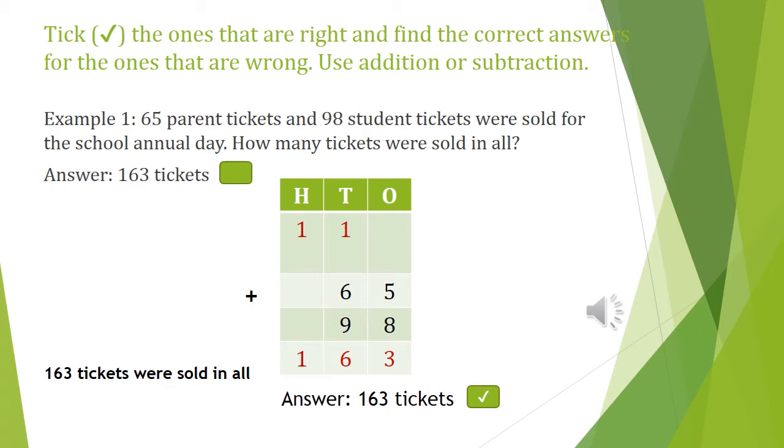Here we need to find the number of tickets being sold for the school annual day. When you see the keyword in all, we need to do addition. Here we are going to add 65 and 98. That is the number of parent tickets and the number of student tickets.